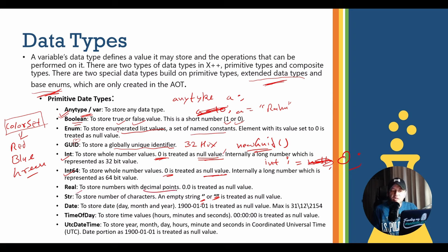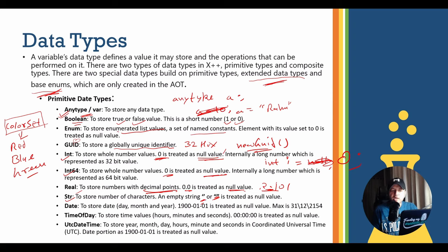Real is for decimal or floating-point values; 0.0 denotes the null value. String stores characters and strings - there is no separate char type as in C++. An empty or null string is denoted by single or double quotes. Date stores date values, and the null date is denoted by the value where 1900 is the year, followed by month and day. You also have time of day, and UTC datetime which stores year, month, day, and hours in coordinated universal time - useful when you need to store time zone information.